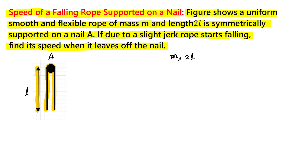It is said that on this side we apply a slight jerk. Then the rope will start coming to this side, and at one point the whole rope from this side will go on top and then the rope will fall. So when it just leaves off the nail, we have to find the speed of the rope.